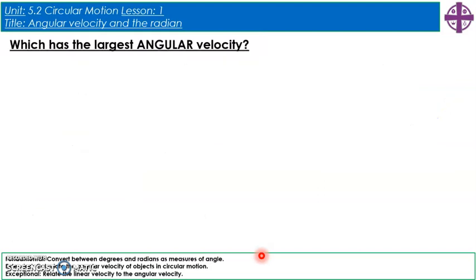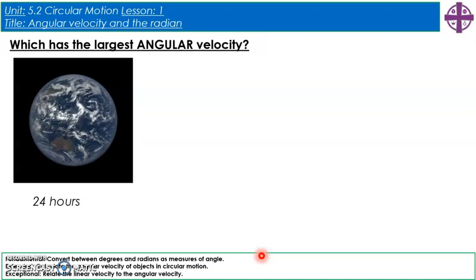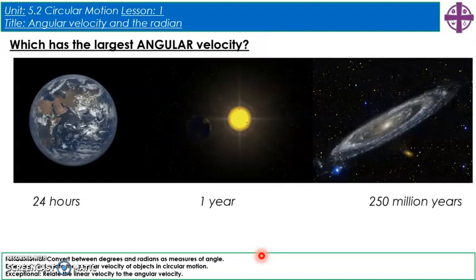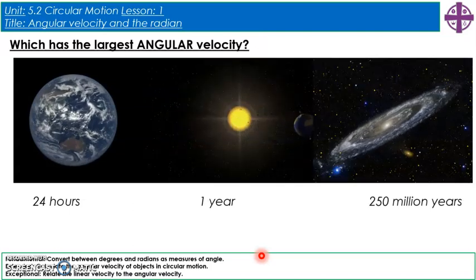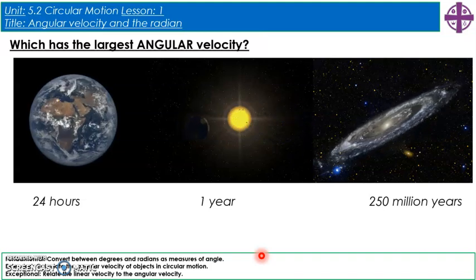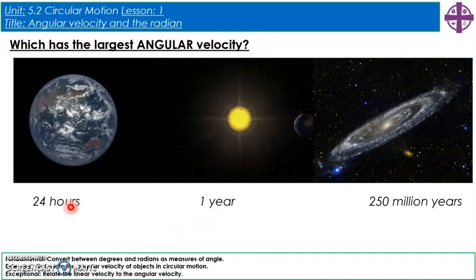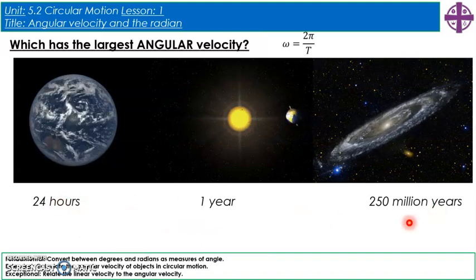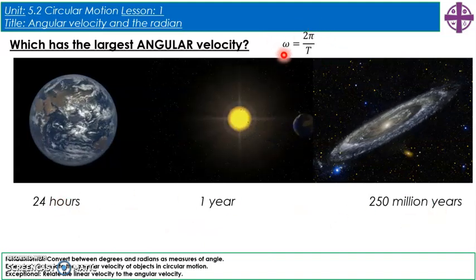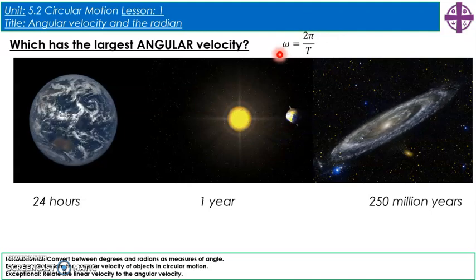Now let's use those equations to find which of our three motions has the largest angular velocity — the earth's rotation, the earth's orbit of the sun, or the solar system's orbit around the Milky Way galaxy. Convert those time periods into seconds and use omega = 2π/T to work out the angular velocity.